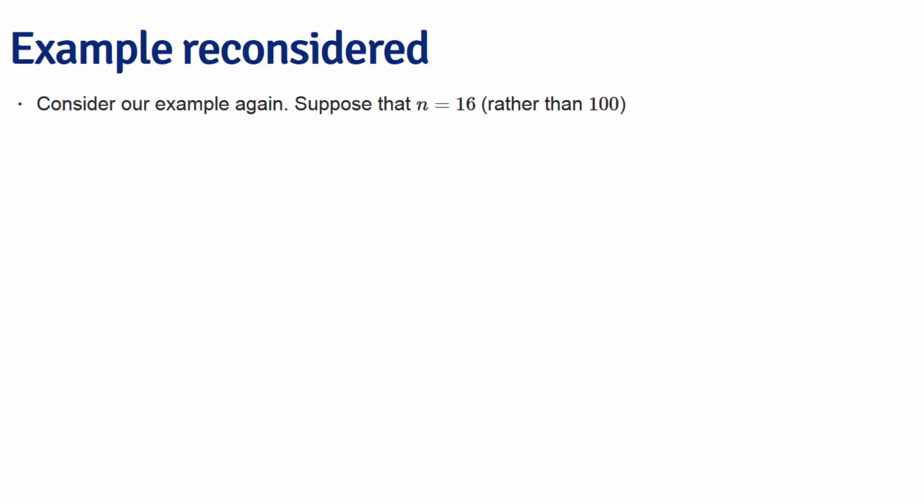Consider our example again. Suppose that n was 16 rather than 100. The test statistic remains the same: the sample mean minus the hypothesized mean, where we were testing H0 mu equals 30 versus HA mu greater than 30.